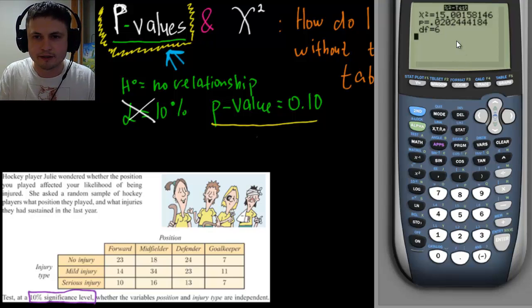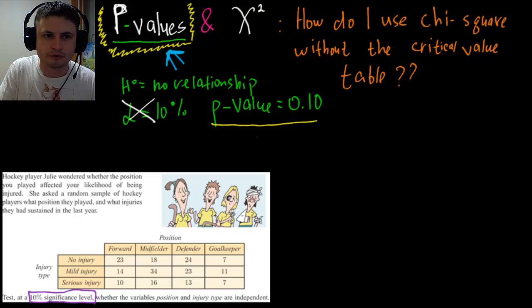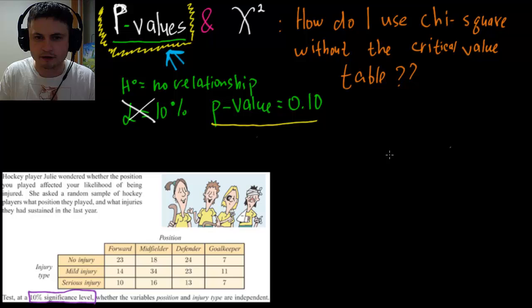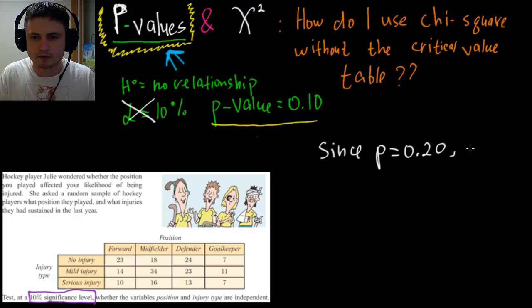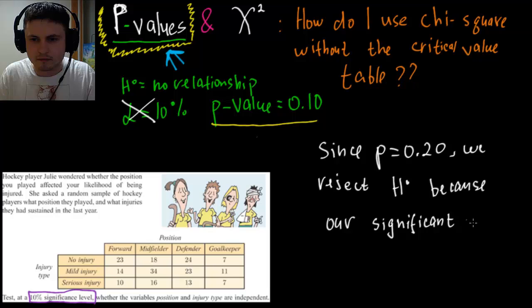So on the test, what you are going to be basically explaining is that because the p-value is 0.02, since p-value is 0.02, we reject the null hypothesis, reject our H0, because our significant p-value is 0.1. So basically that's all you have to do. And that's how you would answer this question.